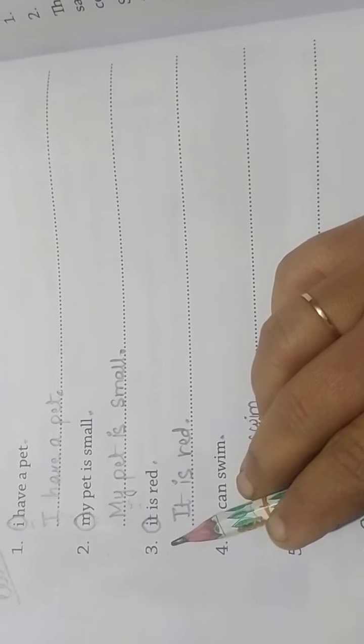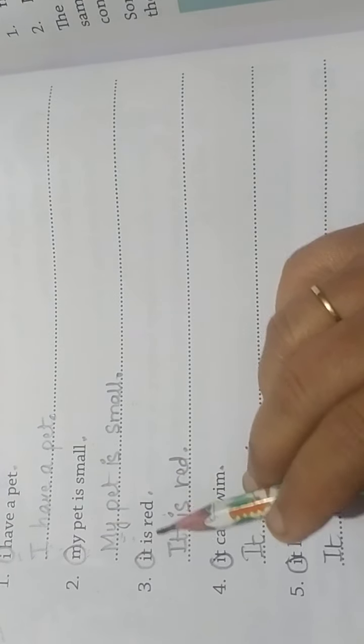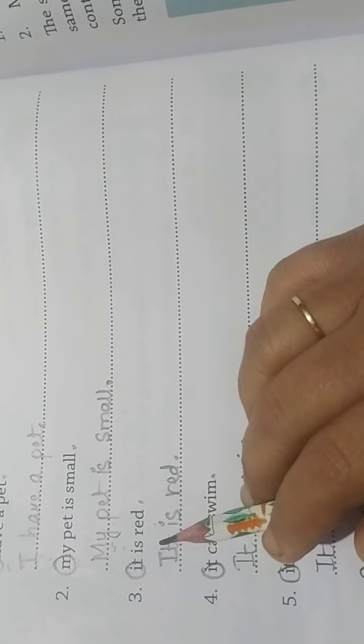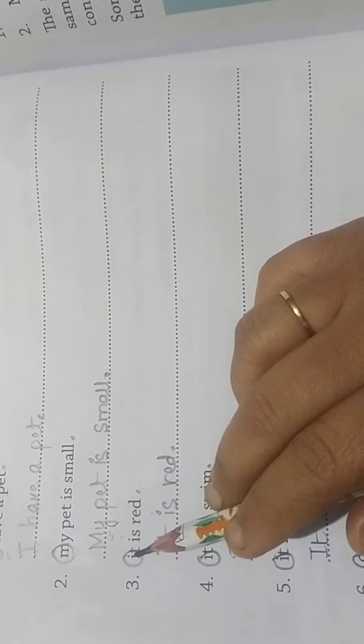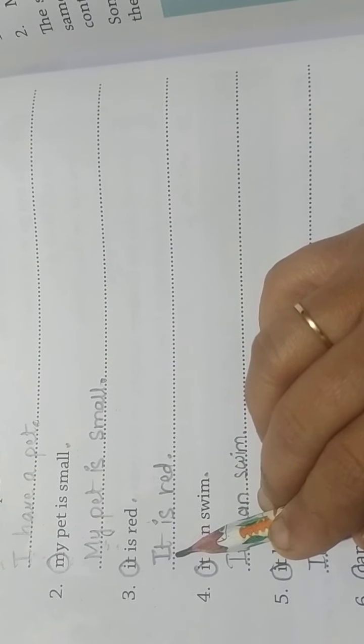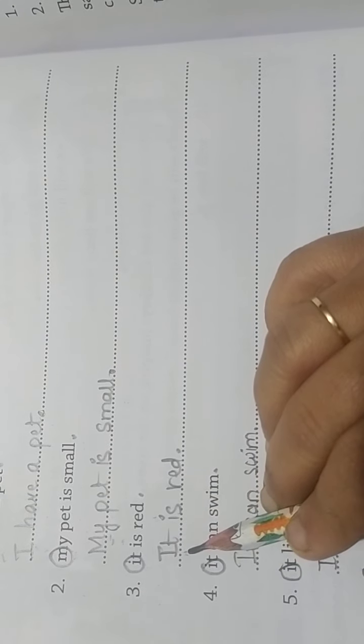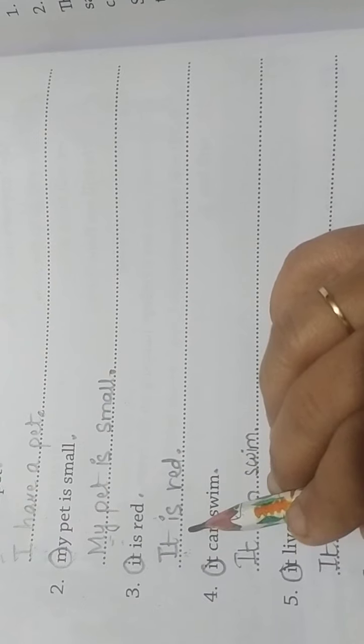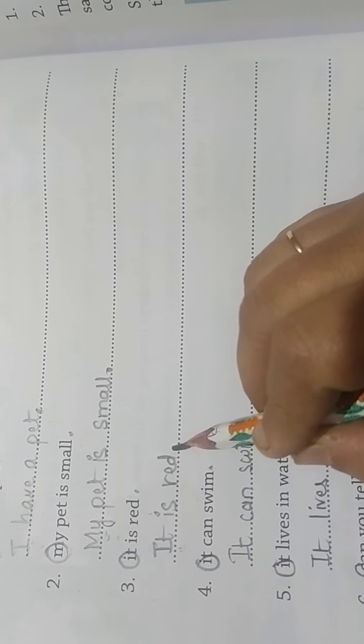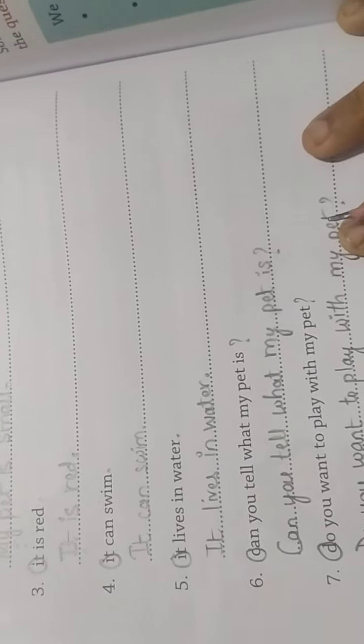Number 3: It is red. My pet is red. Okay, so it's capital because it is the beginning of the sentence. So I capital - it is red. And last, full stop. Why? Because you are informing me.